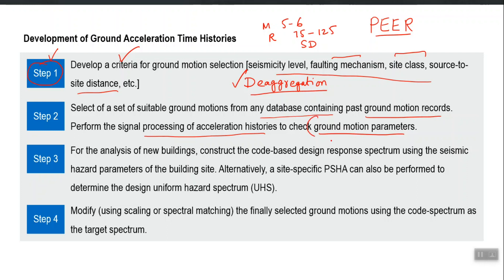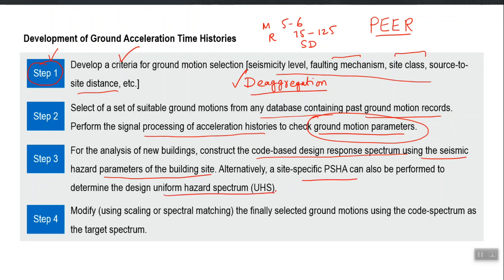Ground motion parameters give us an initial idea about the type of ground shaking, but the real characteristics become visible when you plot their acceleration response spectrum. The shape of the acceleration response spectrum gives a clear indication of what type of ground motion it is. For the analysis of new buildings, you construct the code-based design response spectrum which defines the hazard level at your site using S_S and S_1, or through a site-specific PSHA that provides a uniform hazard spectrum. Step 3 is the hazard level of your site.